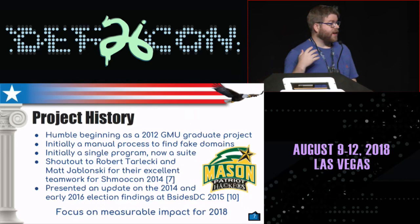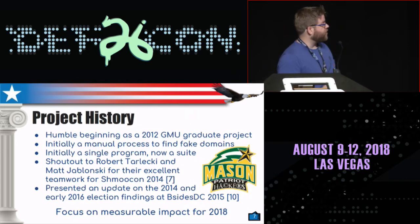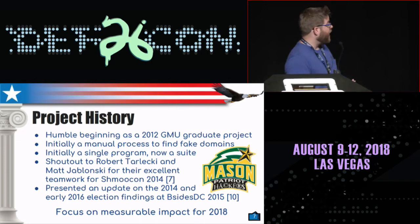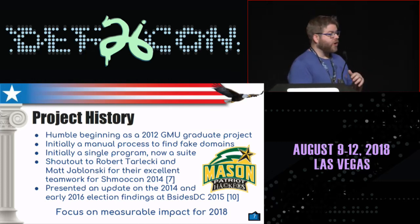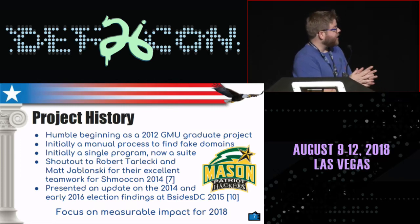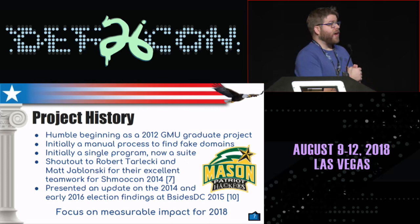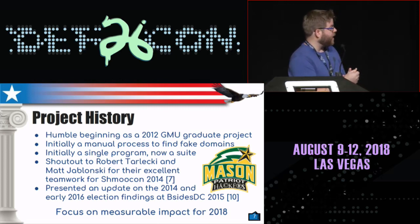This all started in 2012 as a George Mason project — go Patriot Hackers. This was just something I needed a semester project for, and I thought it would be interesting to take a look at who was basically typo squatting on Mitt Romney and Obama. We were basically just hunt-and-peck typing, trying to find various fake sites. Shout out to Robert and Matt who were really on the ground floor. We actually presented our initial results at ShmooCon in 2014. After that we released the first version of our code at BSides DC in 2015. Since then we've been basically collecting huge amounts of data, looking at all the infrastructure we can find, and we were really focusing on having a measurable impact for 2018.